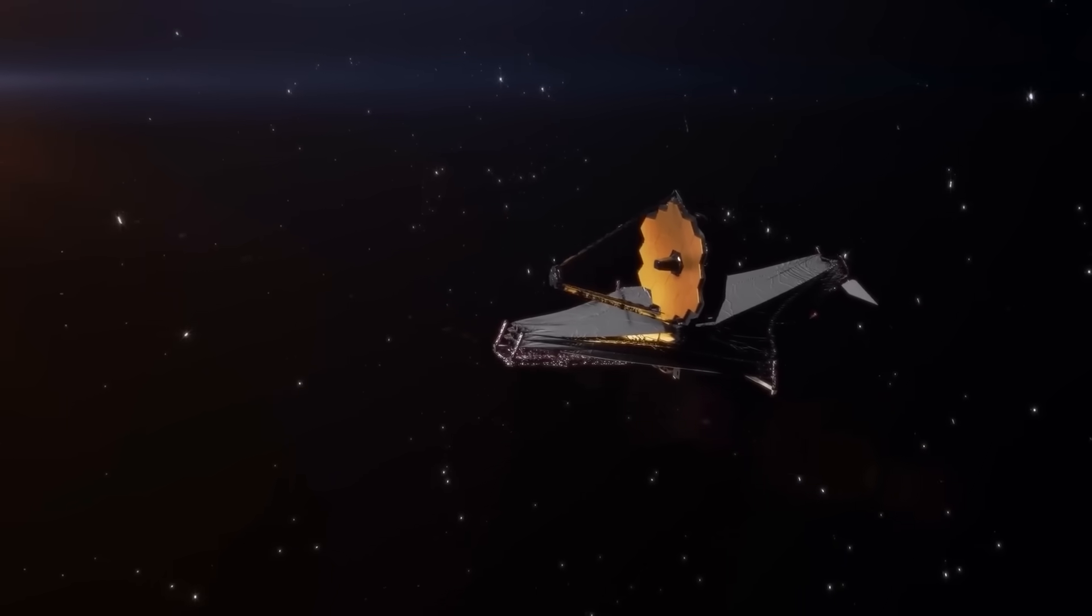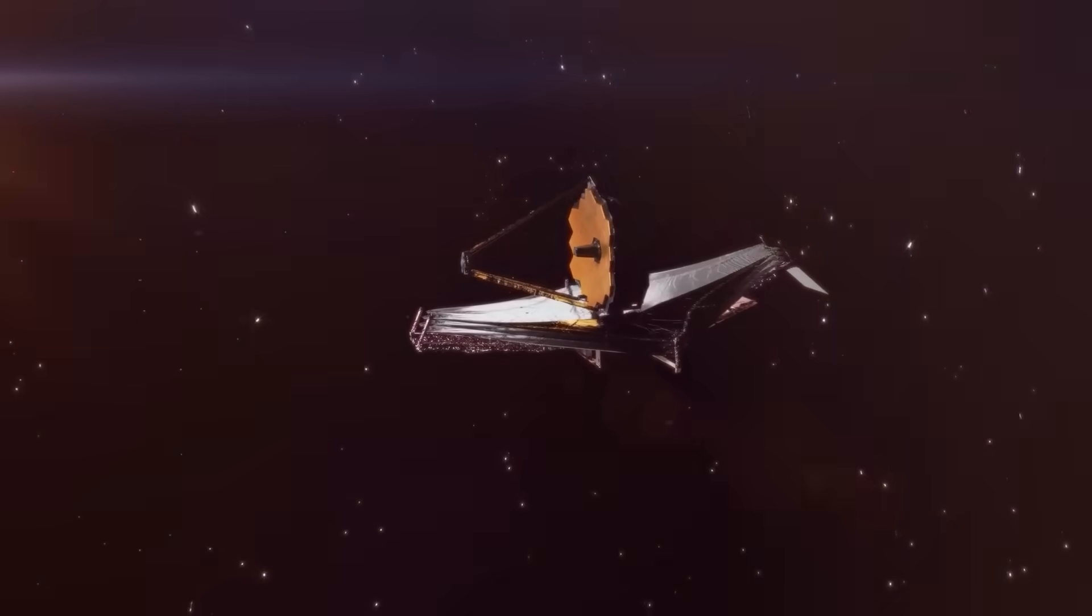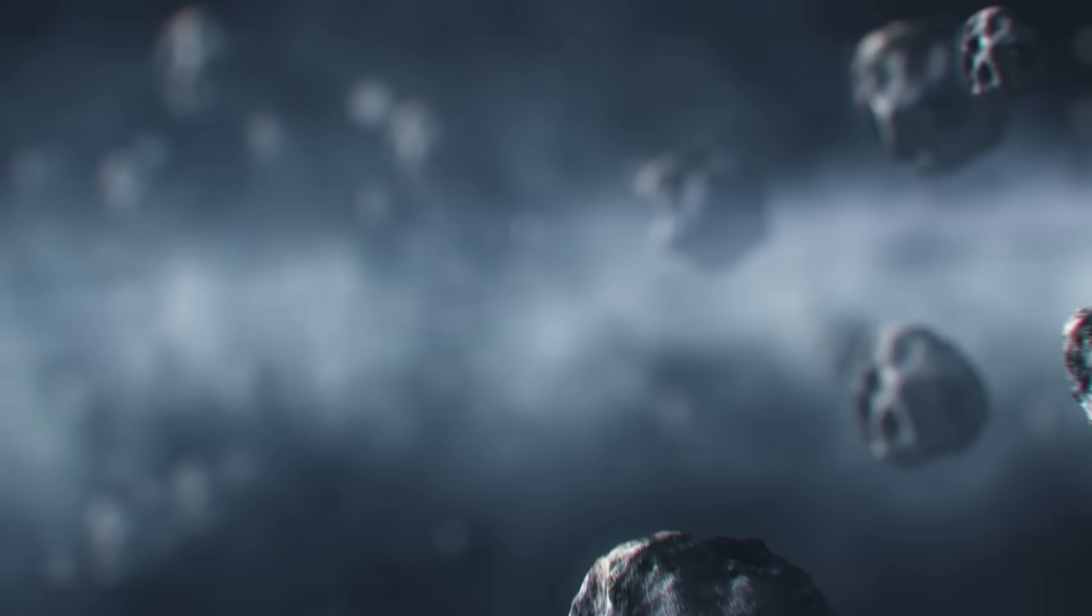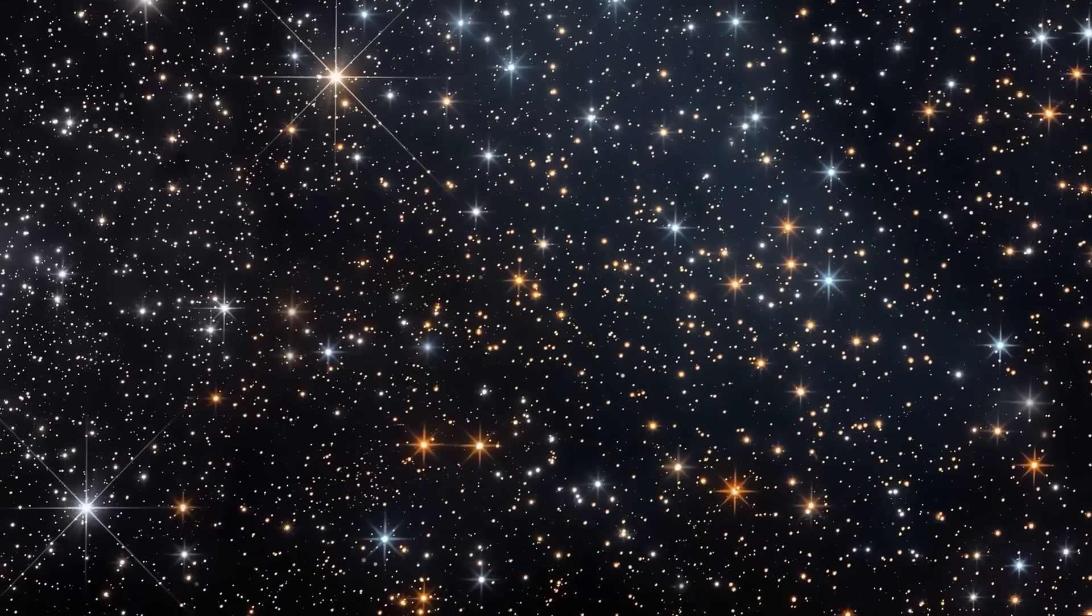Webb's first glimpses of 3I Atlas confirmed what many feared. Its surface was smooth, reflective, and geometric in ways that defied natural formation. Instead of tumbling chaotically through space, it rotated with a steady rhythm, as though stabilized by an internal mechanism. Natural objects don't fly like this. Machines do.